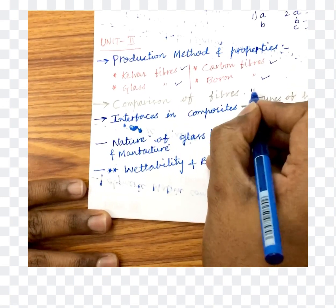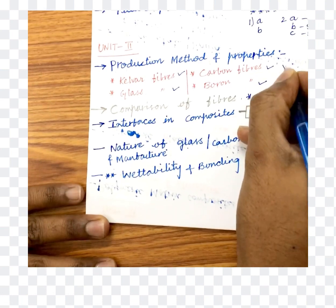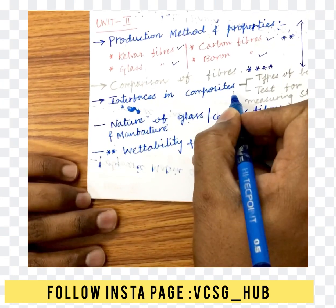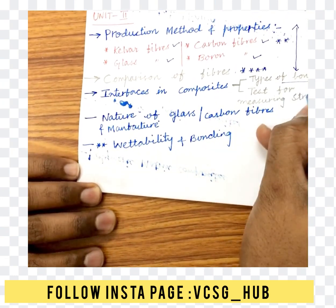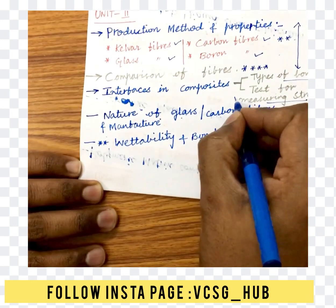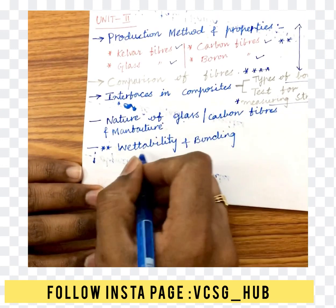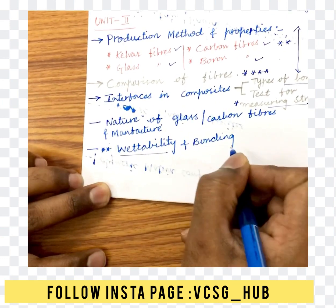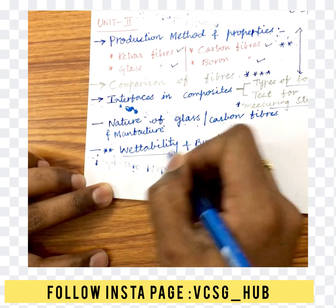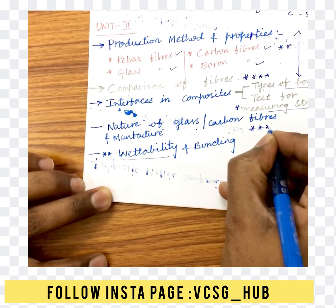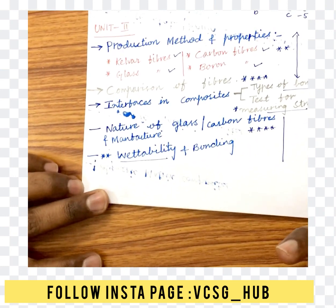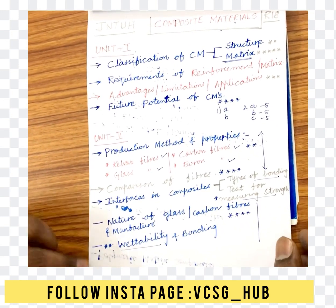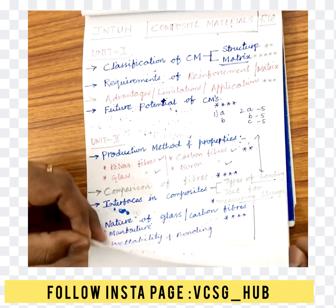The comparison of fibers is also a very important question. We can expect one question from Unit 2. Interfaces in composites and types of bonding are also important. Measuring bond strength is a 5-mark question. Small definitions will also be asked for 5 marks, such as differences between wettability and bonding. The nature of glass or carbon fibers and their manufacturing is also an important question. We can expect 1.5 questions from Unit 2, or sometimes 2 questions since the unit is a bit lengthy.